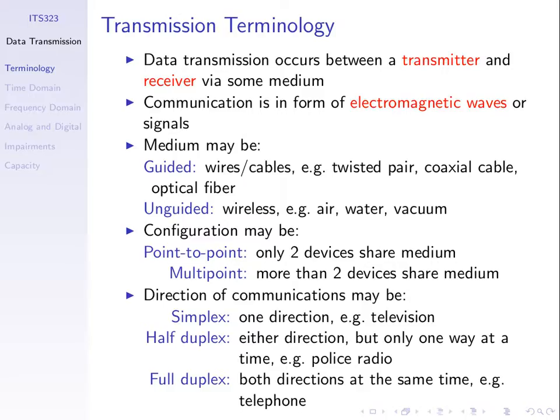But we can have multipoint configurations where there are more than two devices sharing a medium. An example would be air — wireless. We typically think of wireless communications as multipoint, though some cases we'll think of it as point-to-point. When I'm talking to you, I'm generating a signal coming out of my mouth and there are multiple receivers of that signal. So it's one to many — multiple points sharing this medium.